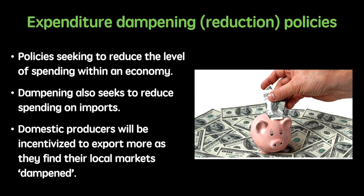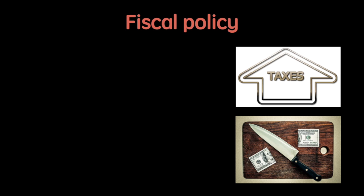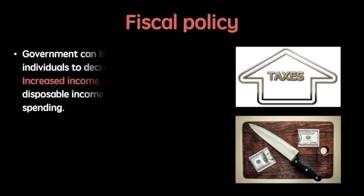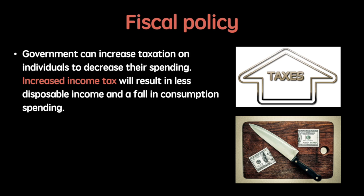If the fall in spending reduces the sales they can earn domestically, they will be encouraged to look abroad for more lucrative markets. To dampen spending, government can increase taxation on individuals to decrease their spending.